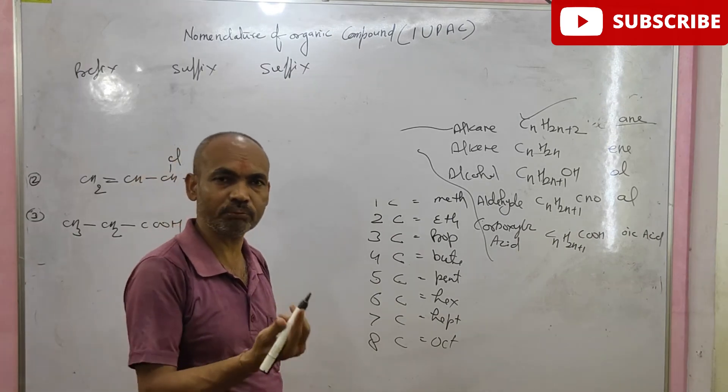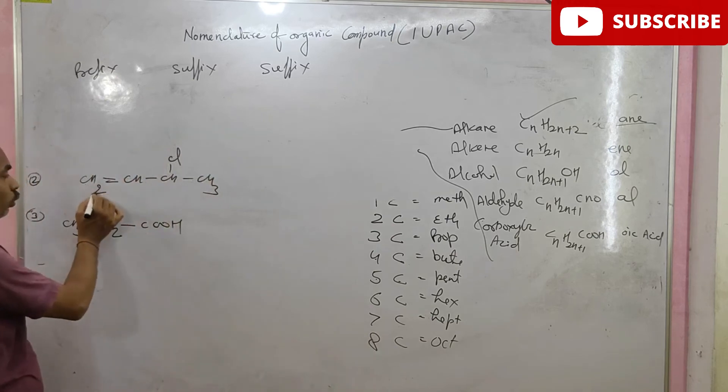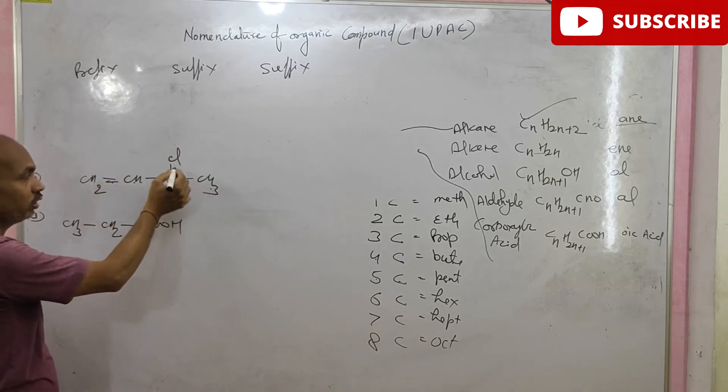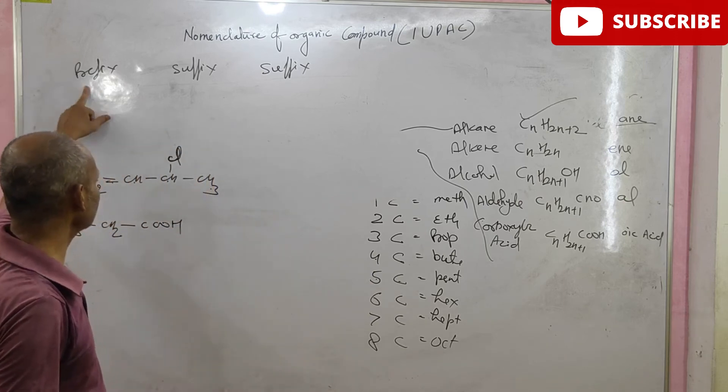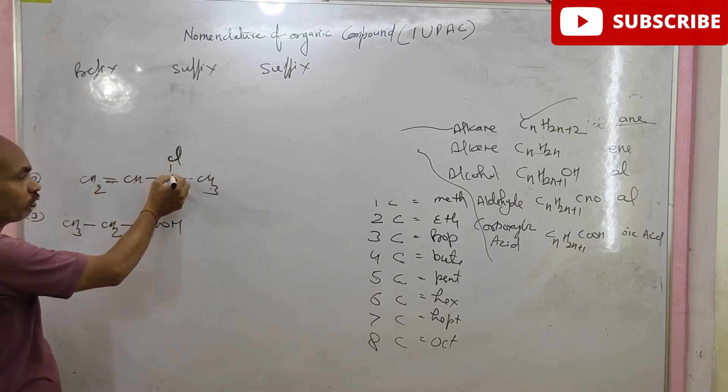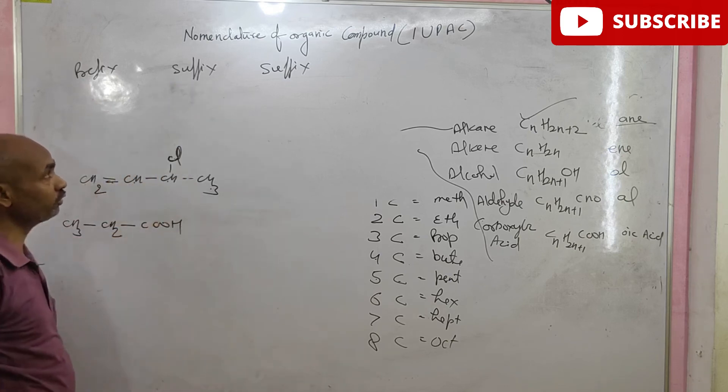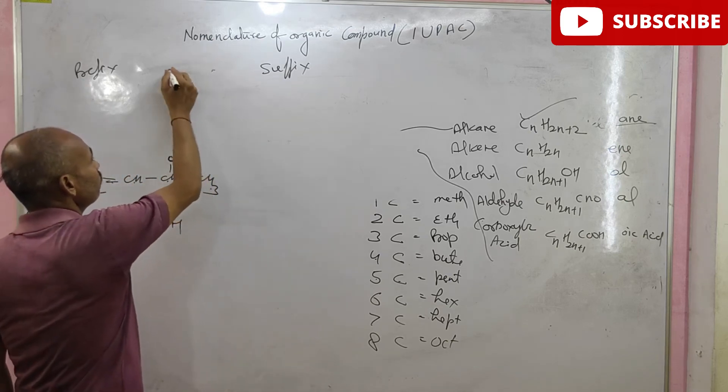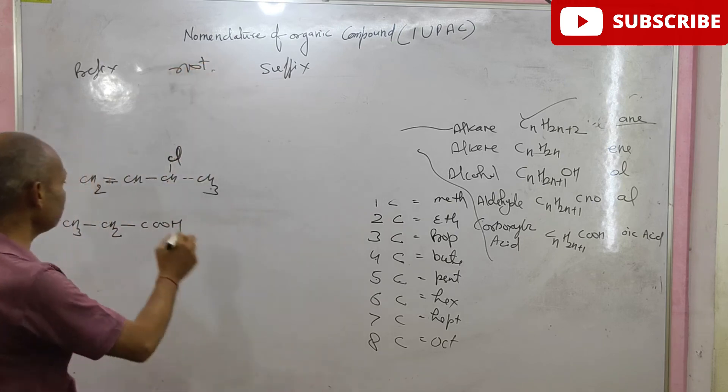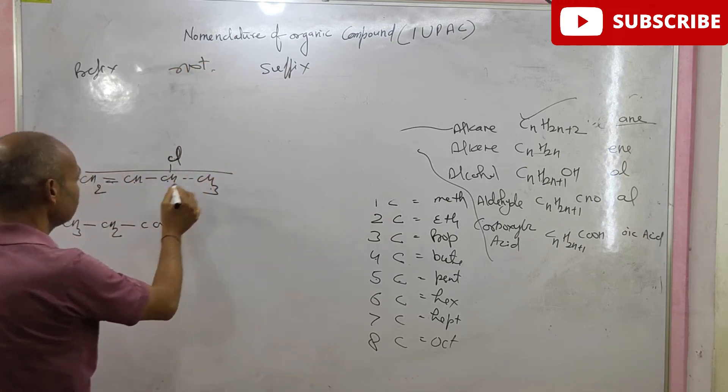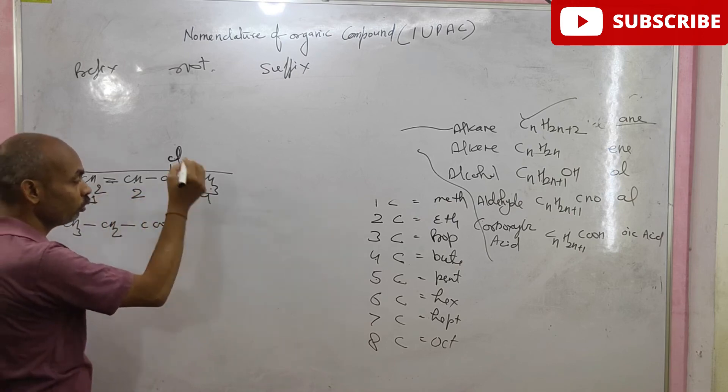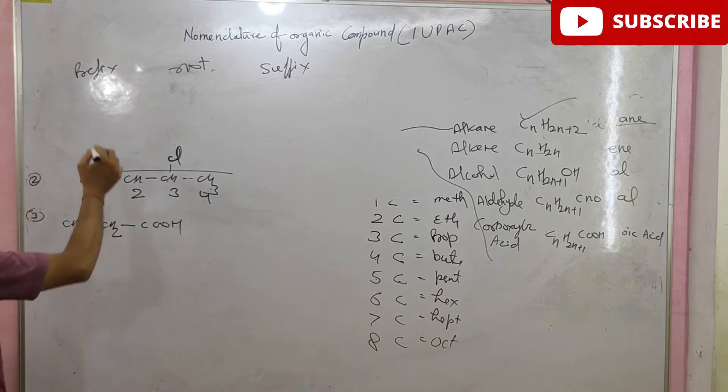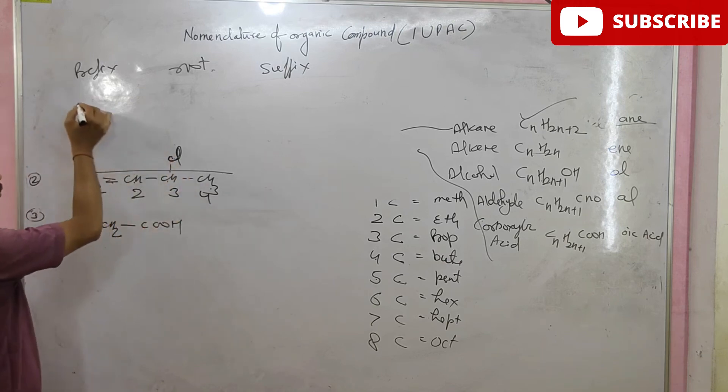Let us take another example. CH2, double bond, CH, CH, CH, CH3 and CL. First of all, we should find the prefix. There are prefix is chloro. And second is root. To find the root, we should find out the longest chain. There is longest chain and start the numbering in longest chain. 1, 2, 3, 4.